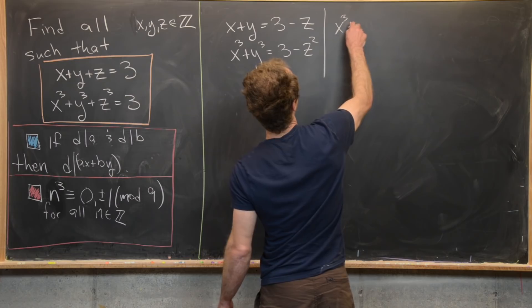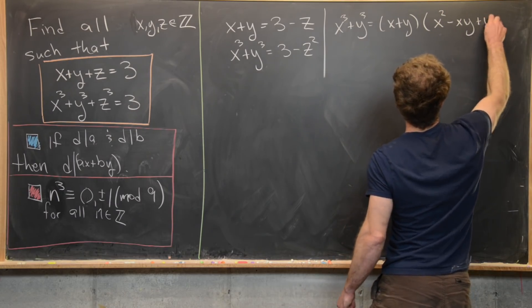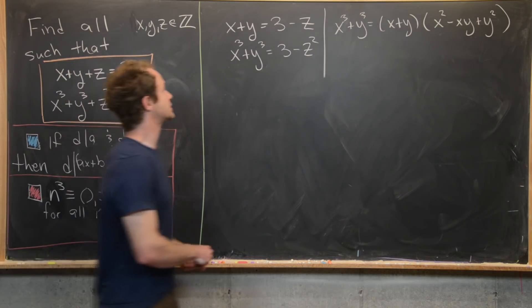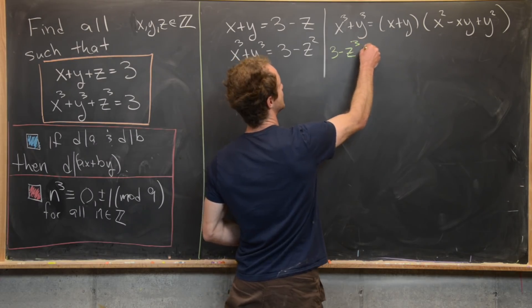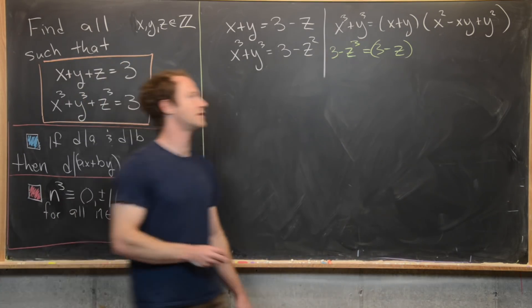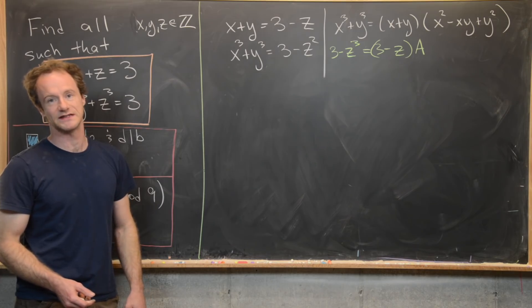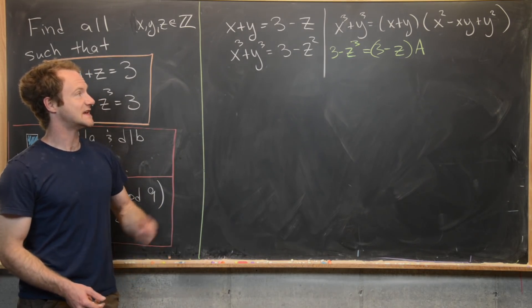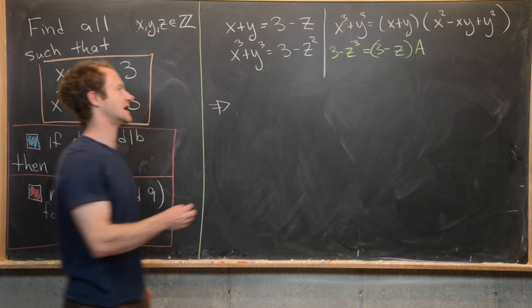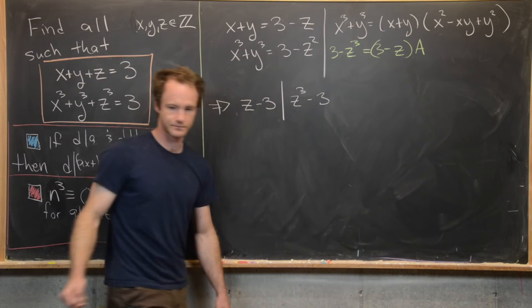Using the identity x cubed plus y cubed equals (x plus y)(x squared minus xy plus y squared), and substituting x plus y = three minus z and x cubed plus y cubed = three minus z cubed, we get: three minus z cubed equals (three minus z) times A, where A is that second factor. So three minus z cubed is a multiple of three minus z, meaning z minus three divides z cubed minus three.